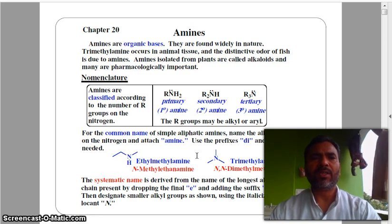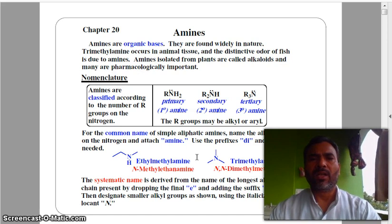Amines are organic bases. They are found widely in nature. Trimethylamine occurs in animal tissue and the distinctive odor of fish is due to amines. Amines isolated from plants are called alkaloids and many are pharmacologically important.